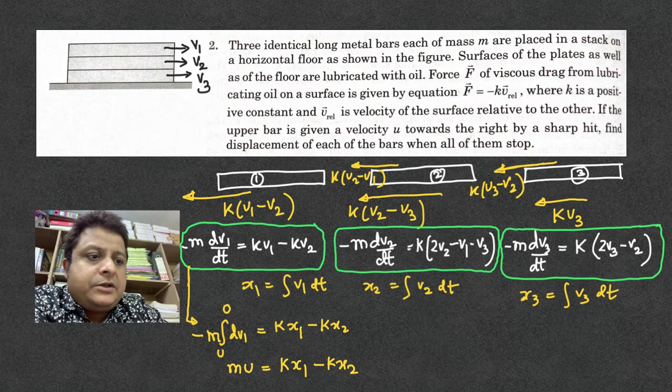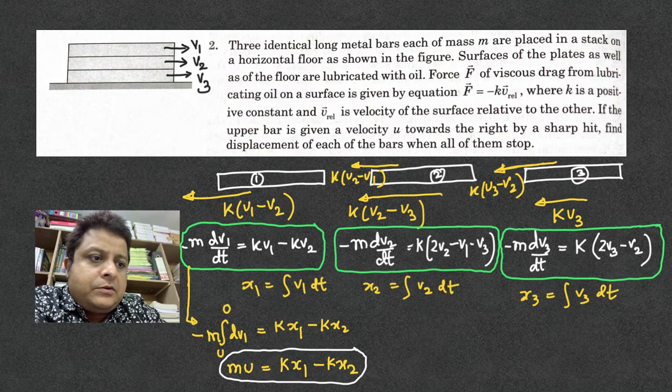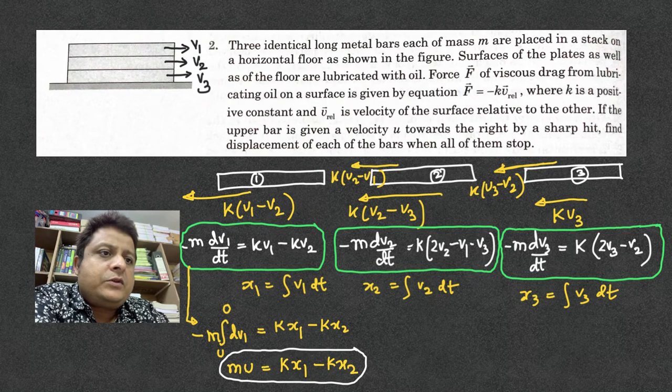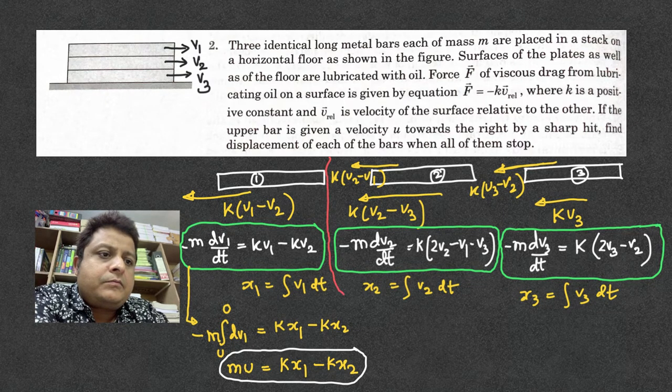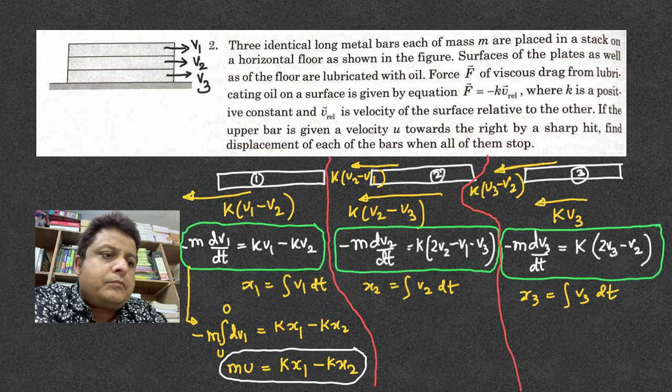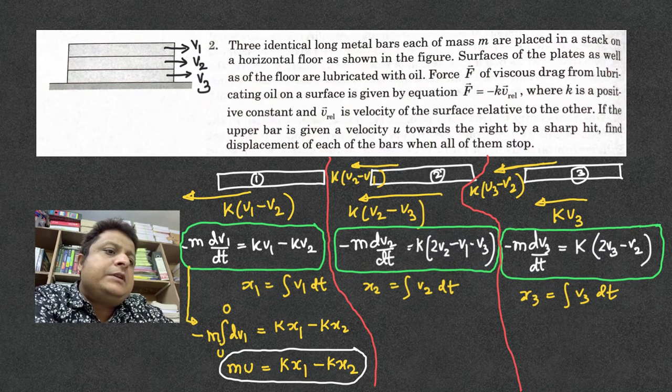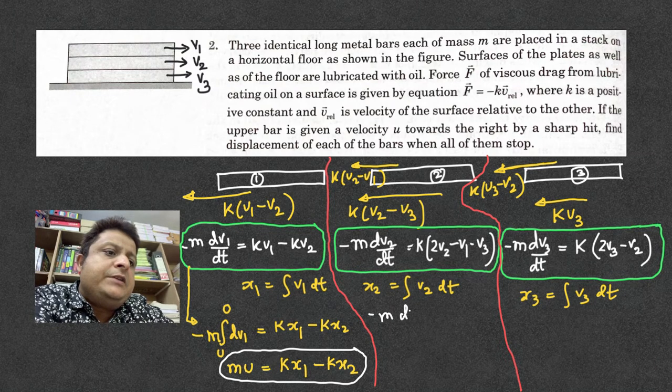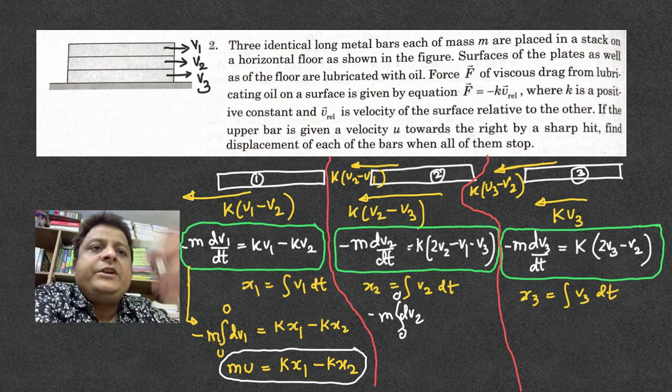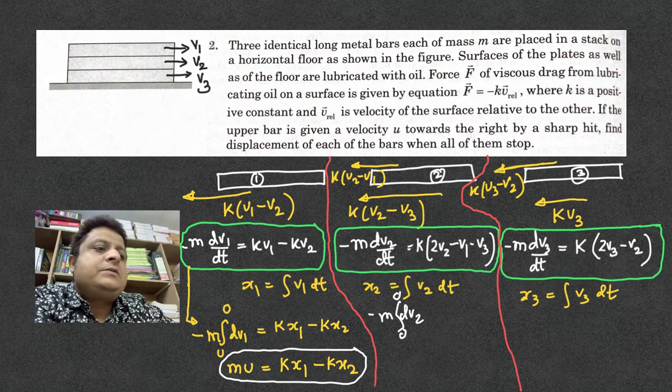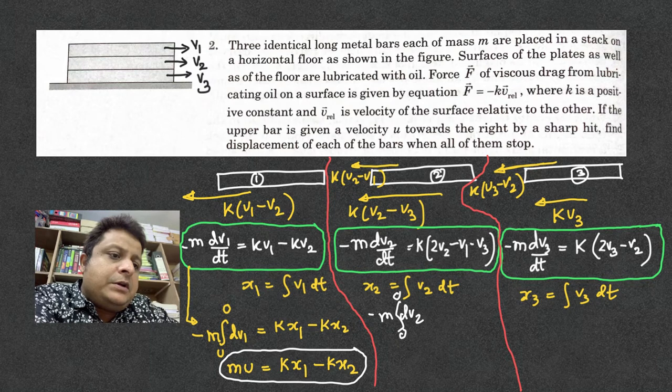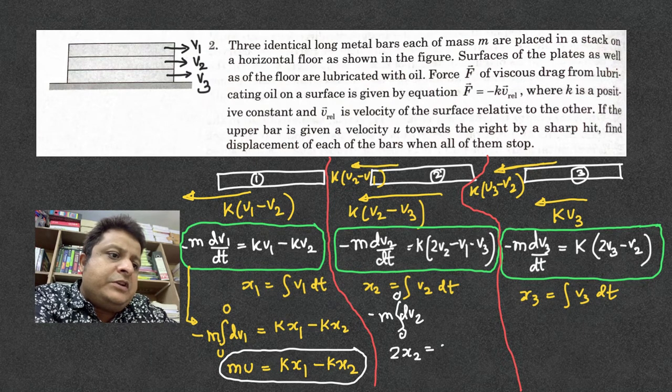Next, suppose we integrate -m dv2. It starts from zero and ends up at zero because v2 starts at zero and stops at zero. Therefore, on the left side you have zero, so 2x2 = x1 + x3.